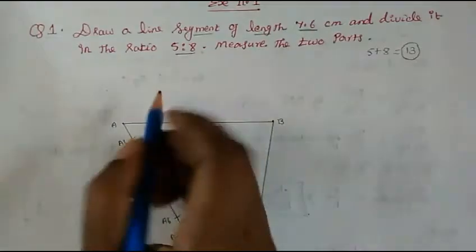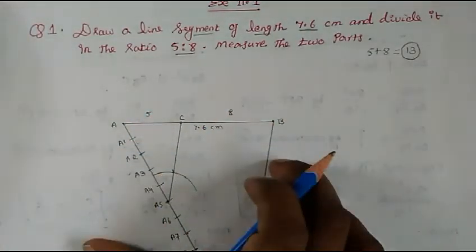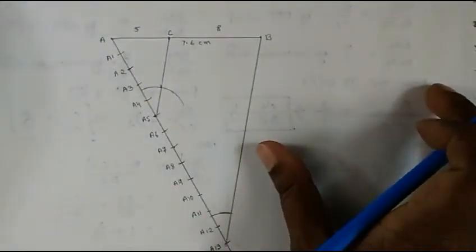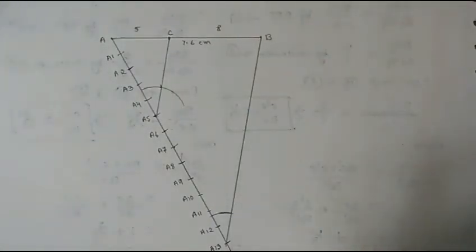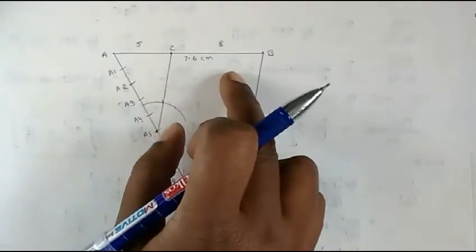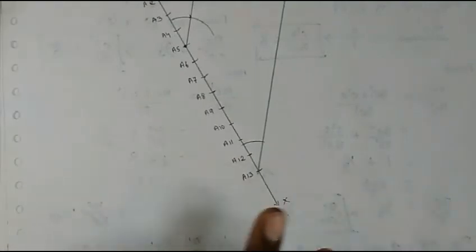This point and A5 we join. So now this is our point C. This line AB is divided in the ratio 5:8. Now you have to write down the steps — that is compulsory. Whether they ask in the question or not, steps must be written. Justification you write only if it is asked.